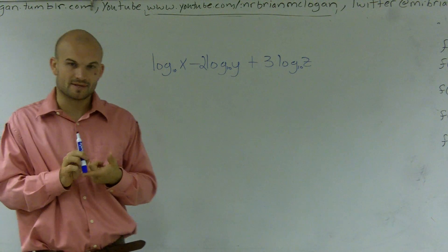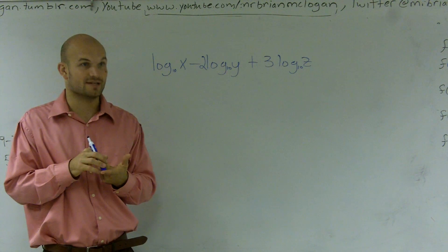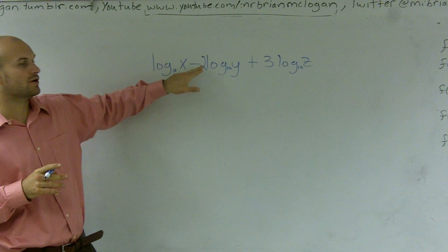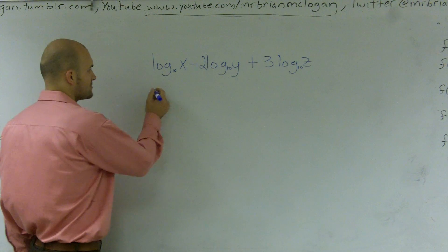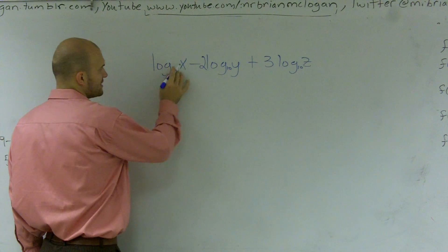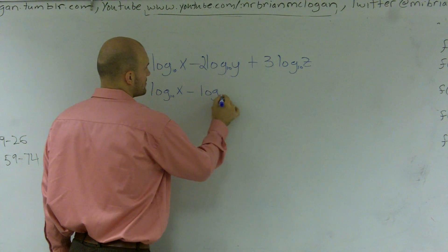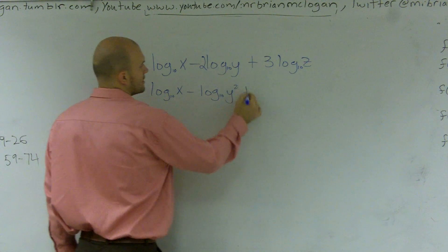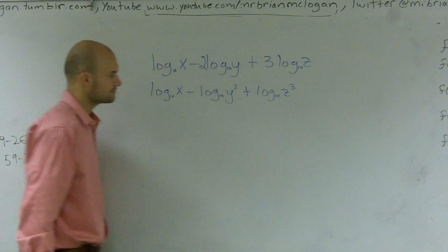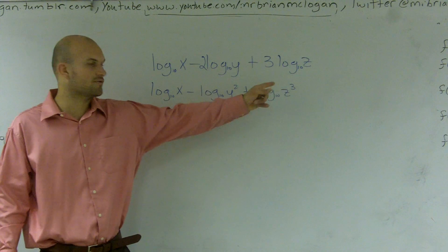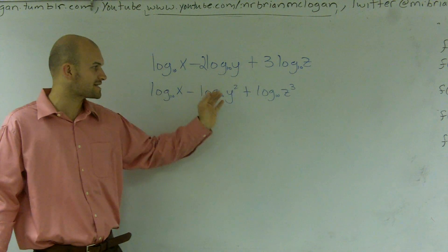A couple things we need to remember: order of operations still carries into pre-calculus. So the first thing I'm going to do is get rid of these numbers in front and put them as exponents — rewrite them back as exponents. So I have log base 10 of x minus log base 10 of y squared plus log base 10 of z to the third power. Remember the property where you can bring an exponent in front to multiply? I'm just taking those back, so now there are exponents.